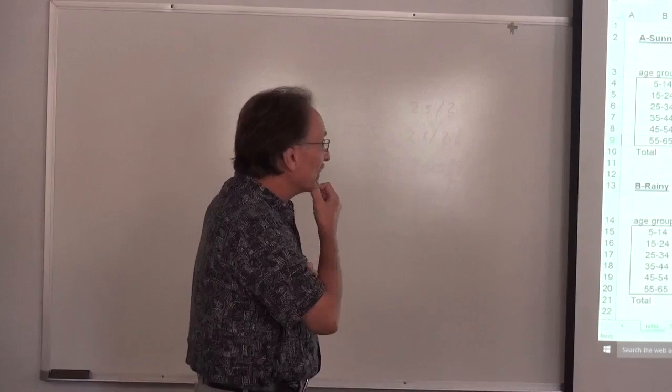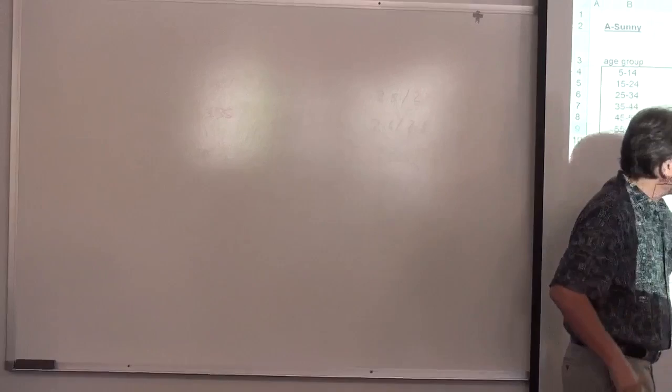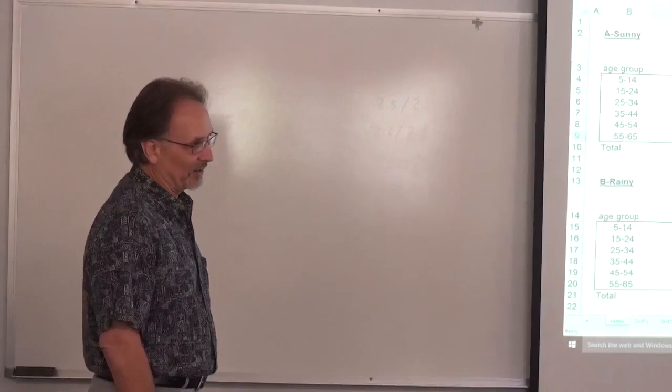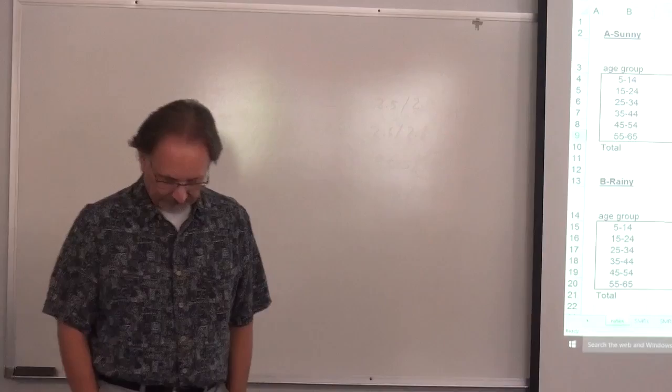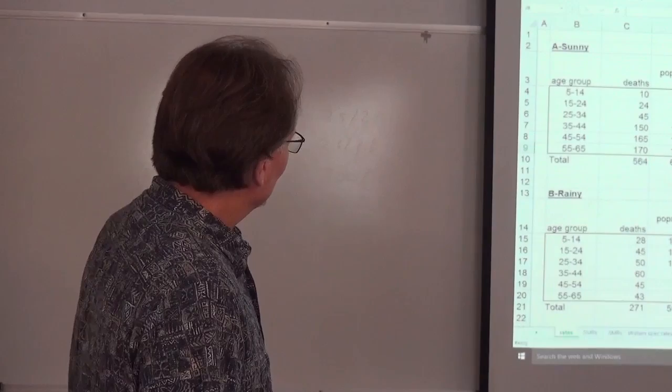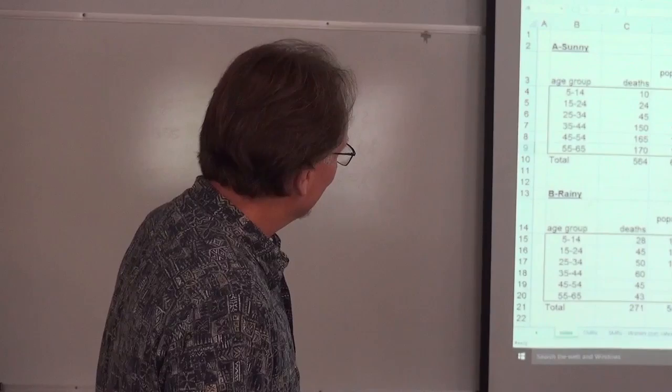Another thing to look at is the comparison to the standard. The standard population doesn't have quite a preponderance in the older category, so Town B is more aligned with the population structure of the standard population. So if we have an age-adjusted population of Town A at 2.98 compared with Town B at 7.33, how do we explain the differences in words without looking at a table?